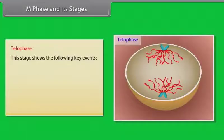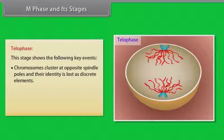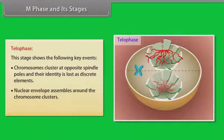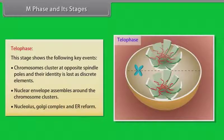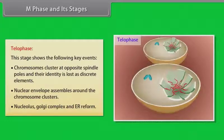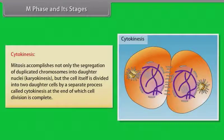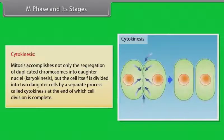The next stage is telophase. It shows the following key events: chromosomes cluster at opposite spindle poles and their identity is lost as discrete elements. Nuclear envelope assembles around the chromosome clusters. Nucleolus, Golgi complex, and ER reform. Mitosis accomplishes not only the segregation of duplicated chromosomes into daughter nuclei, karyokinesis, but the cell itself is divided into two daughter cells by a separate process called cytokinesis, at the end of which cell division is complete.